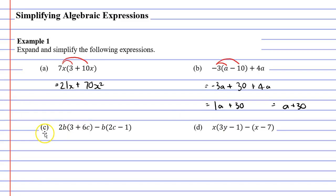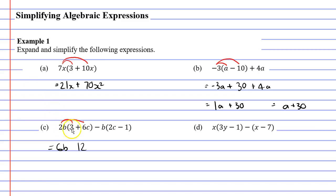Let's now move on to question C. You'll see that this time we have two sets of brackets. We'll focus on the first set. We're going to multiply 2B by 3, and we're also going to multiply 2B by 6C. 2B times 3 gives us 6B. Then 2B times 6C: 2 times 6 is 12, and because we've got the B and the C we write 12BC. We've got to put a plus between them.